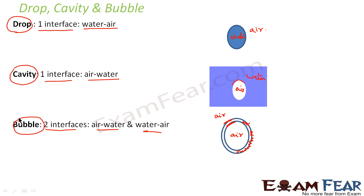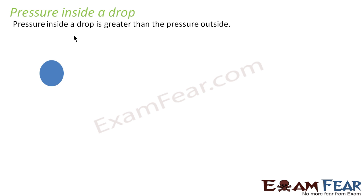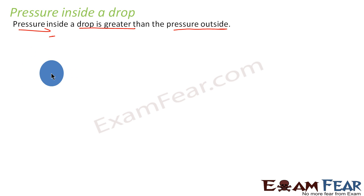Now we will see how pressure varies inside a drop, cavity, and bubble. In case of a drop, the pressure inside is greater than the pressure outside. Let us see how we calculate the pressure difference. Let us suppose we have a spherical drop of radius r which is in equilibrium, with water inside and air outside.